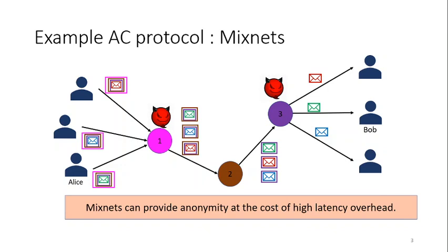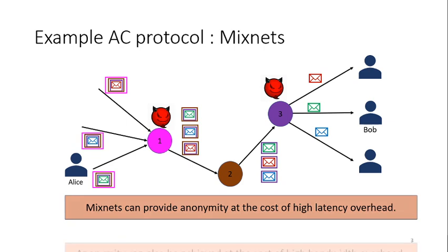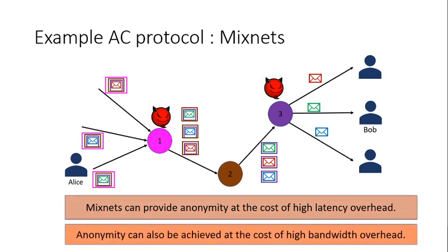How can you reduce the latency overhead? Node 1 doesn't wait for a threshold number of messages and instead adds some dummy messages. However, that introduces bandwidth overhead. As protocol designers, we would love a protocol which provides good anonymity with low latency overhead and low bandwidth overhead.